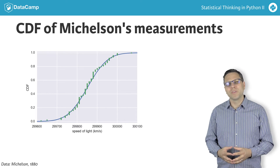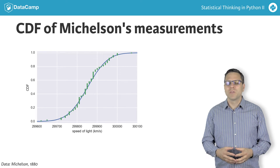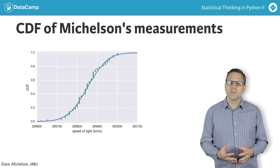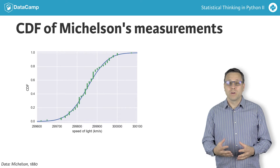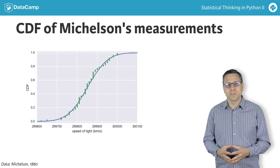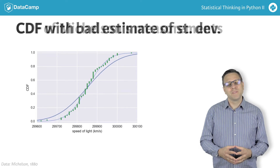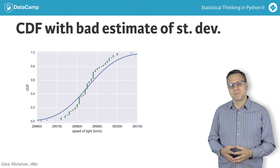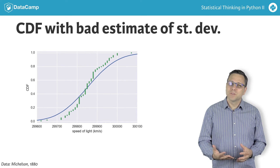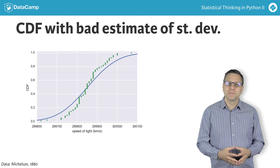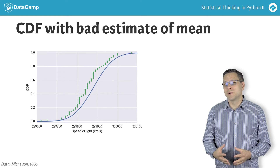How did we know that the mean and standard deviation calculated from the data were the appropriate values for the normal parameters? We could have chosen others. What if the standard deviation differs by 50%? Or if the mean varies by just 0.01%? The CDFs no longer match.